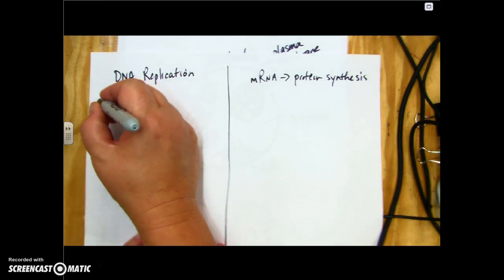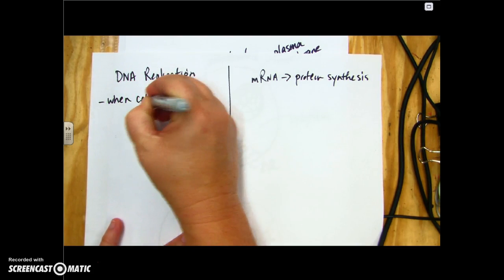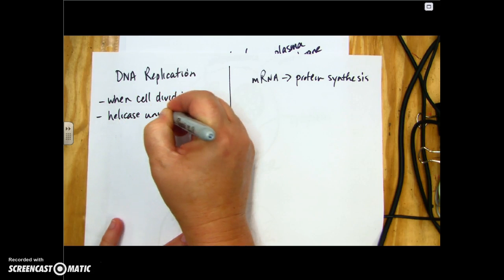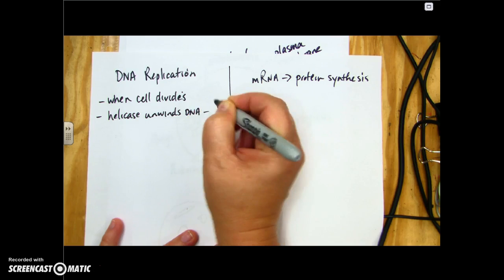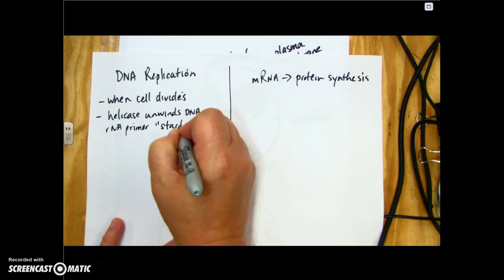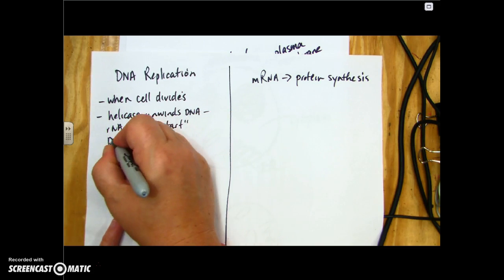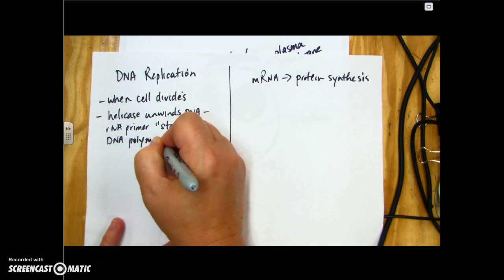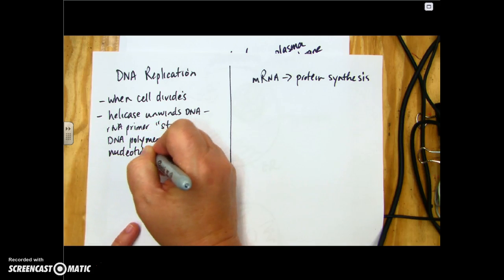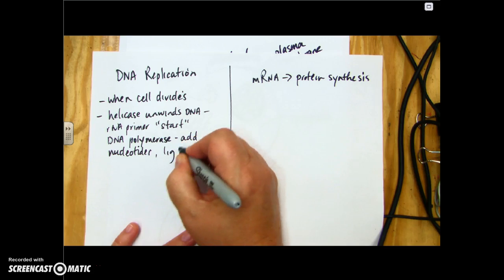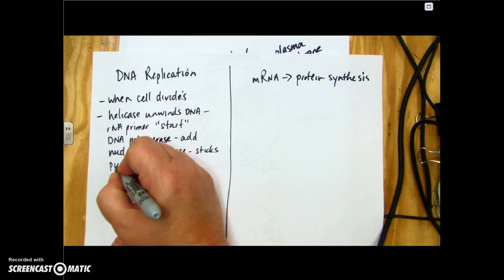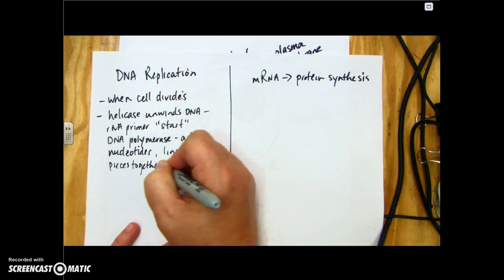DNA replication occurs when the cell divides. This is when helicase unwinds the DNA, then the RNA primer lays down the spot for the start, then DNA polymerase comes in and adds the nucleotides, and then ligase is the enzyme that comes in and sticks the pieces together — most specifically the Okazaki fragments.